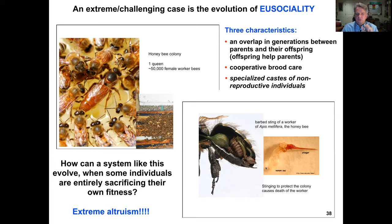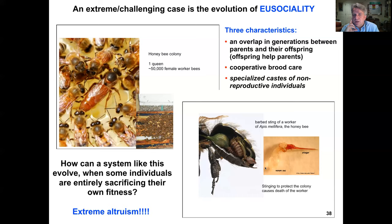How does this extreme altruism evolve? There's no really clear direct answer, but there are tantalizing clues. We'll learn that eusociality relates to the unique reproductive systems of some eusocial insects — but not all eusocial organisms have this unique mode. It also seems that ecology can determine whether eusociality is advantageous.